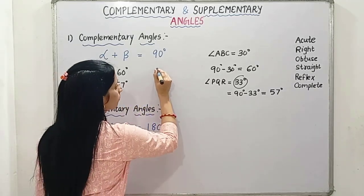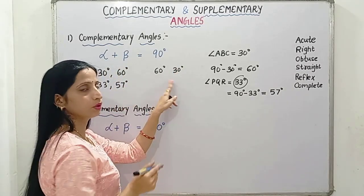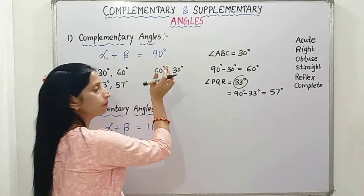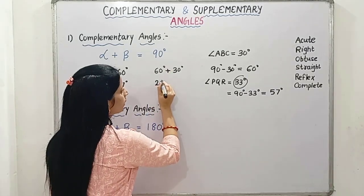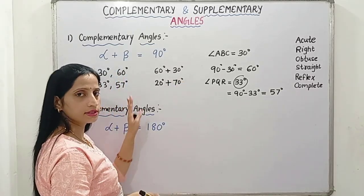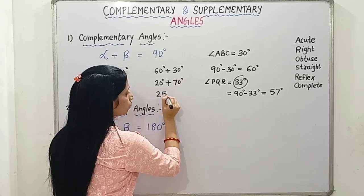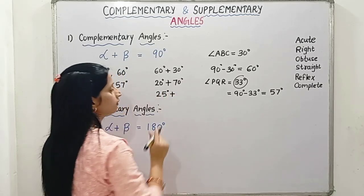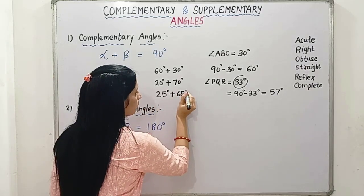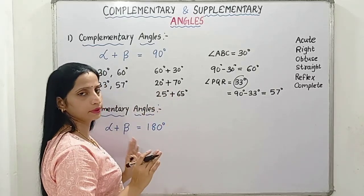We can take any other pair — 60 degrees and 30 degrees, so when we will add, we will get 90 degrees. These two are also complementary angles. 20 degrees and 70 degrees are complementary angles, and so on. We can take any pair. 25 degrees, and when we will subtract 25 from 90, we will get 65 degrees. So these two are also complementary angles, and there are so many pairs.